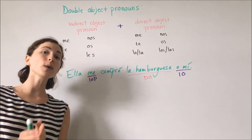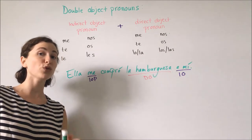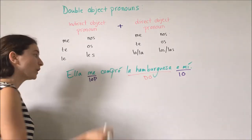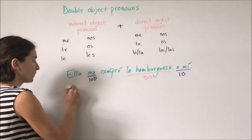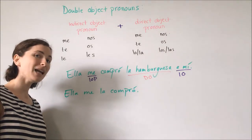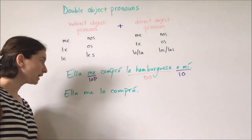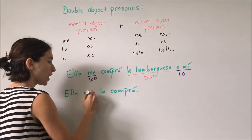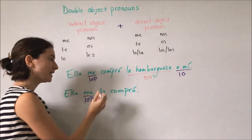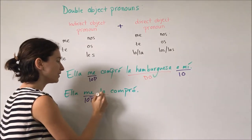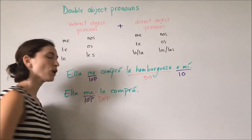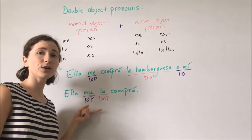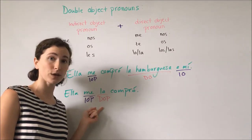As mentioned, our indirect object pronoun always comes before our direct object pronoun. So when we put this together, we would have 'Ella me la compró.' 'Me' is our indirect object pronoun, which always comes first, and 'la' is our direct object pronoun, which always comes second. This is the order — it is invariably the order.